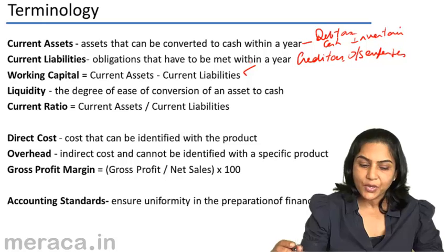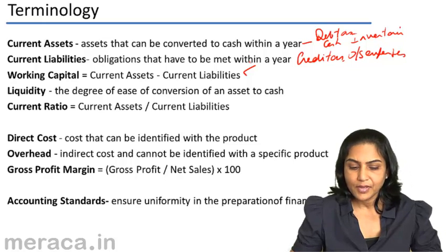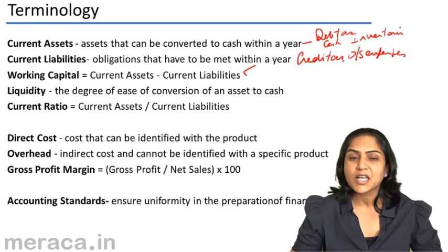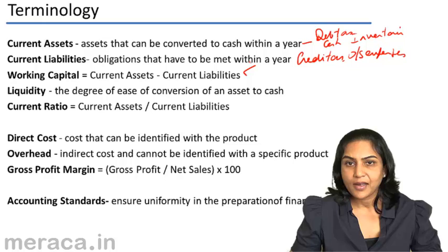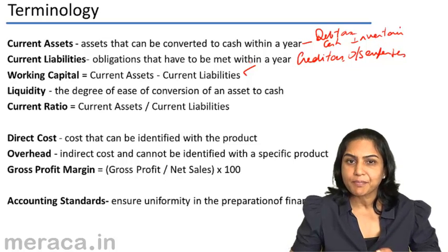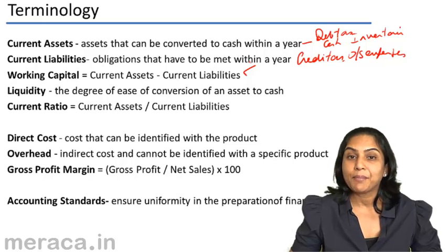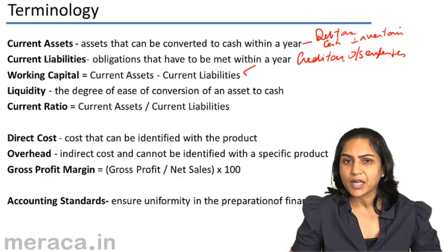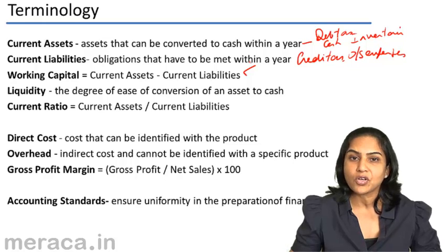Liquidity is the degree of ease of conversion of an asset to cash — how quickly an asset can be converted to cash. For example, cash is considered to be the most liquid of assets, while a building would be considered the least liquid, since it would not be possible to sell a building quickly at short notice without some loss in value.